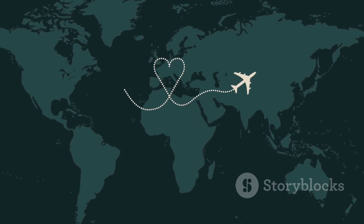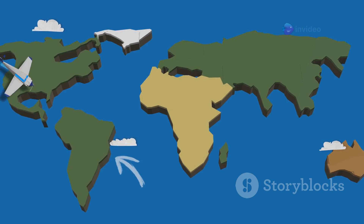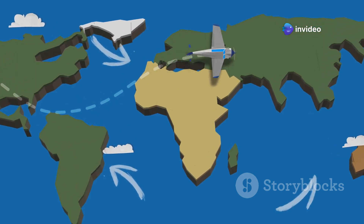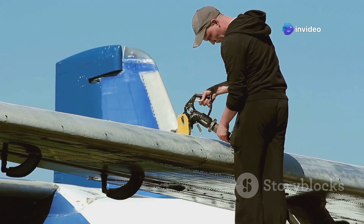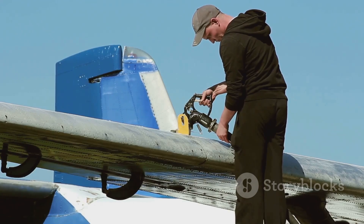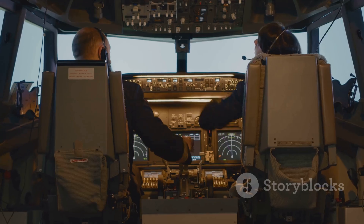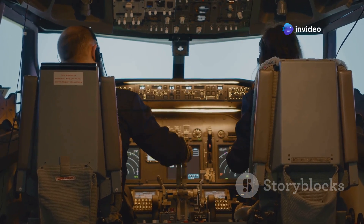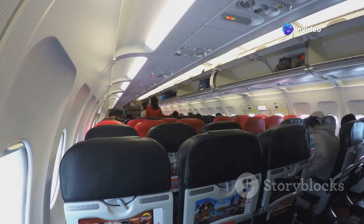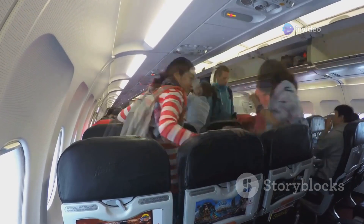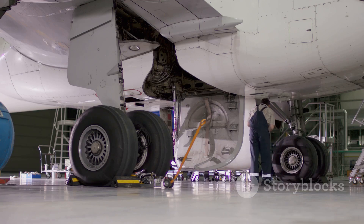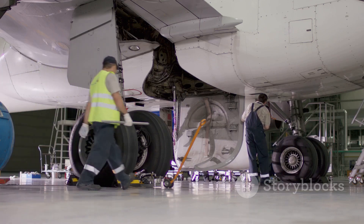The next time you see a flight path on a map that appears curved, remember there's more to it than meets the eye. It's not just about connecting two points — it's about fuel efficiency, safety, navigating winds, and managing air traffic. The decisions made by airlines and pilots are based on a complex interplay of factors, all with the goal of ensuring a safe, efficient, and comfortable journey. It's a testament to the wonders of aviation and the ingenuity of those who make it possible.